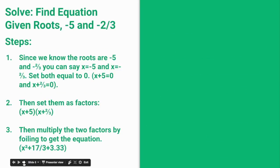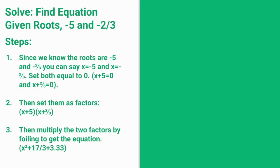Now we are going to find the equation given the roots negative 5 and negative 2 thirds. Since x equals negative 5 and x equals negative 2 thirds, you move both over so you get x plus 5 equals 0 and x plus 2 thirds equals 0. Now you write them as factors: x plus 5 times x plus 2 thirds.